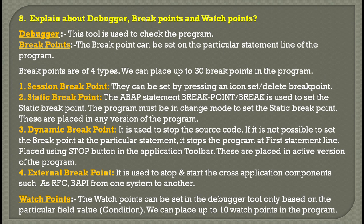A static breakpoint uses the BREAK statement or the BREAK-POINT statement. The program must be in change mode to set a static breakpoint — not in read mode. These are placed in any version of a program. A dynamic breakpoint is used to stop the source code, and if it is not possible to set the breakpoint at a particular statement, it stops the program at the first statement line itself. You also have a stop button in the application toolbar for this. Dynamic breakpoints are placed in the active version of the program, not in inactive areas.